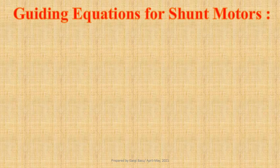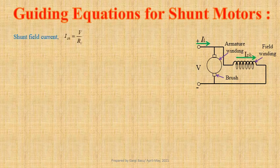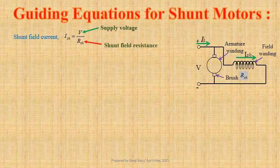In a DC shunt motor, armature and field windings are connected in parallel across a DC source. The current flowing through the shunt field winding ISH equals V by RSH, where V is the supply voltage and RSH is the resistance of the shunt field winding.